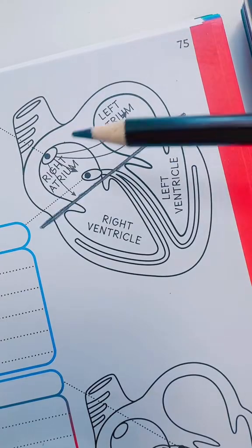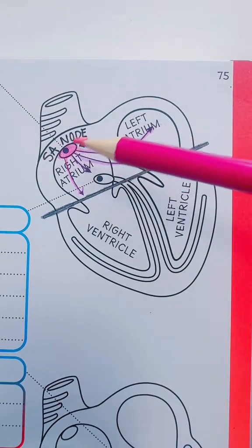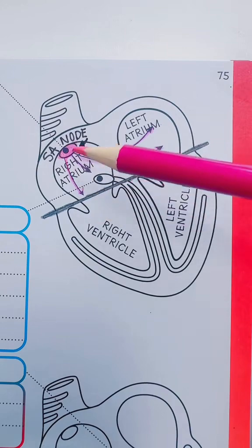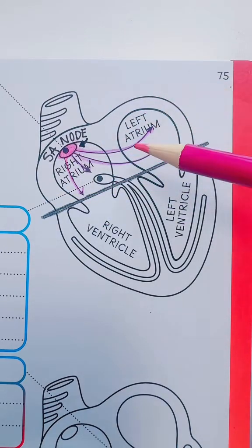There are four chambers of the heart, two on top and two on the bottom. Our bodies have a natural pacemaker known as the SA node, and this fires electricity off and tells the right and left atria to squeeze or contract.